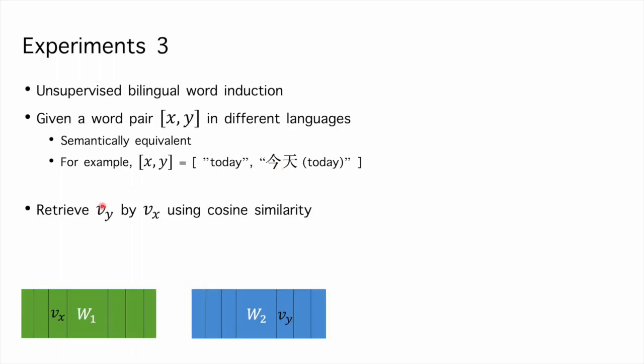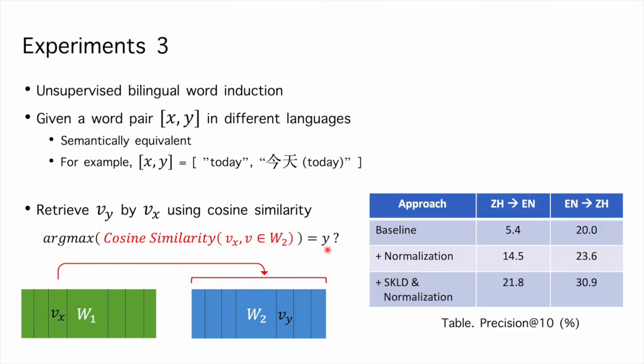For example, we want to retrieve word y using word x. We compute the cosine similarity between vx and representations in W2 and check whether the word y is retrieved. The precision at 10 are shown in the table. As we can see, applying proposed approaches helps on precision. This suggests that constraint and normalization for code-switching language modeling indeed enhance semantic mapping.